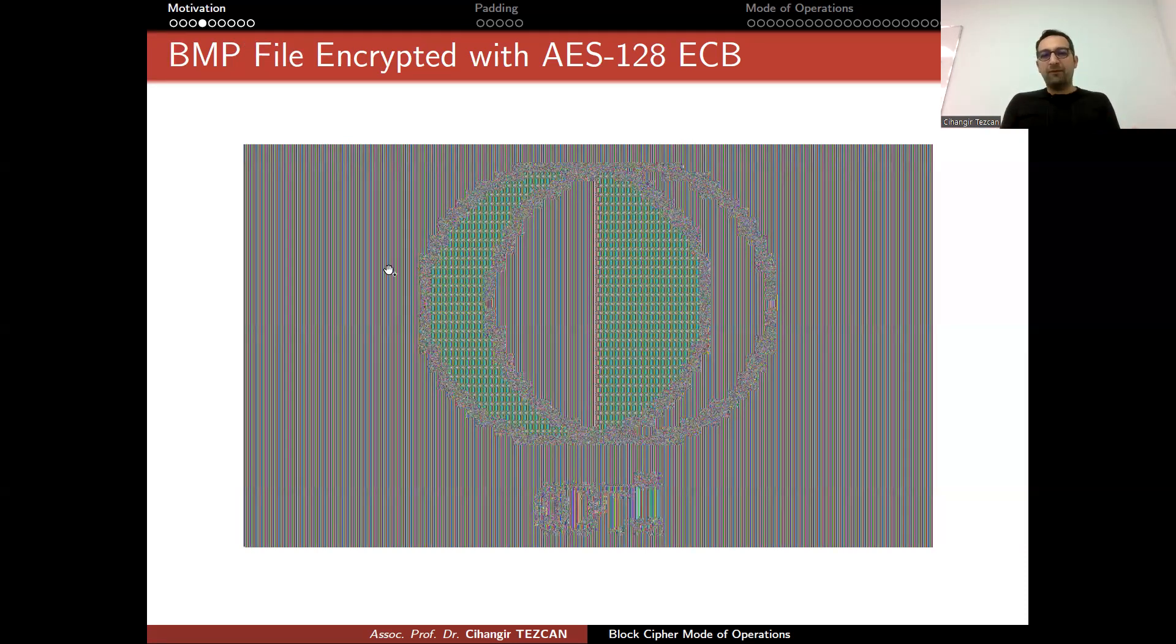So this is for bitmap files, but depending on the file type, if you convert it into pixels, you will understand what the file is doing. For instance, if you encrypt an executable file in Windows, an exe file, then print it as if it is a bitmap image on the screen, then you will see some patterns. And from those patterns, you can even understand where it is trying to access memory. So this is why you can never use the ECB mode of operation.